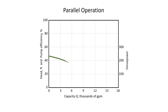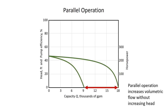In parallel operation, if we have one pump with its curve displayed here and we add a second identical pump, the combined curve would look like this. What we see with parallel operation is that we have an increase in the volumetric flow rate without increasing the head.